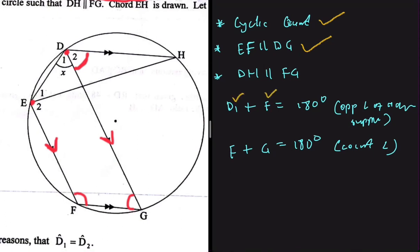So d1 plus F equals 180 degrees, and G plus F also equals 180 degrees. It's easy to see that d1 should equal angle G, because when you add F to both, you get 180 degrees, so they must equal each other. Now for the last keyword: DH is parallel to FG.